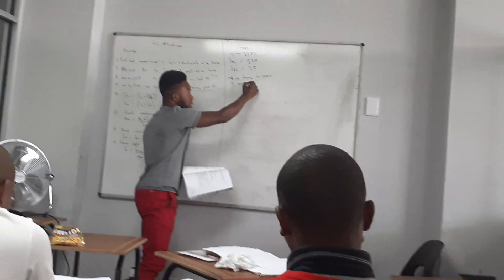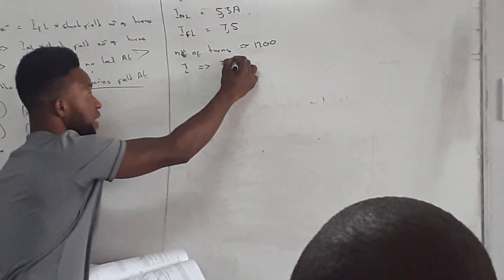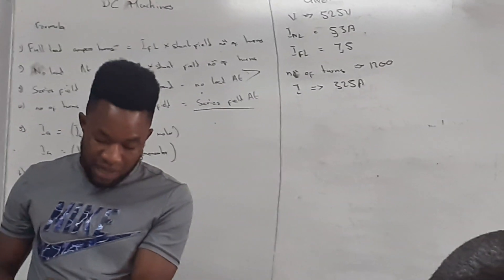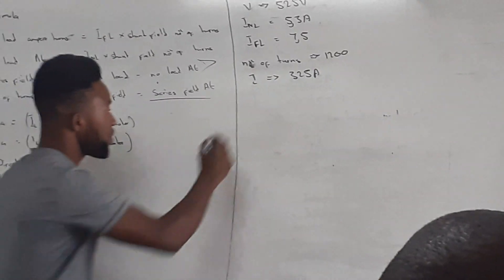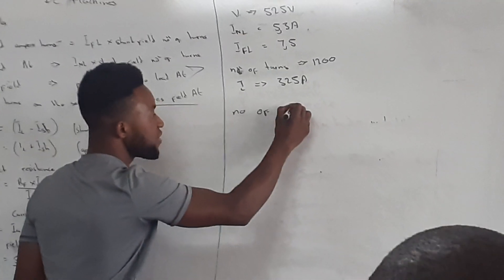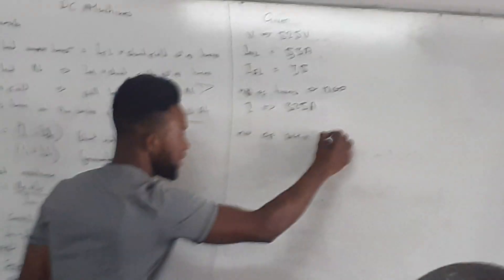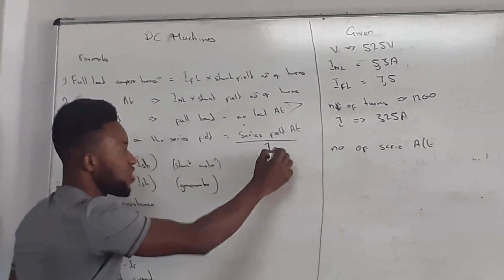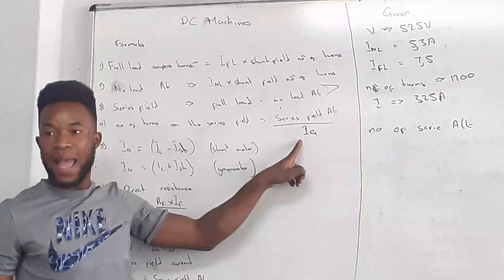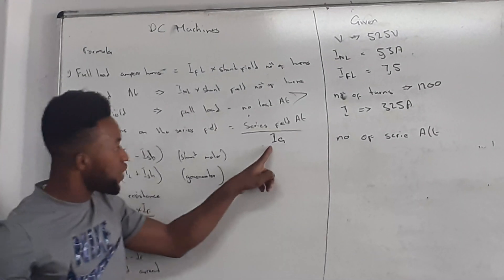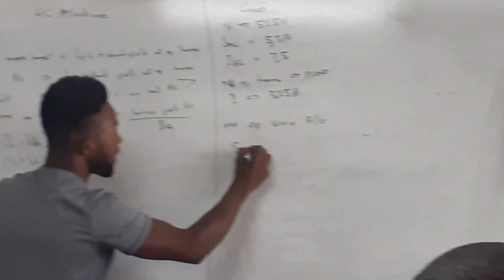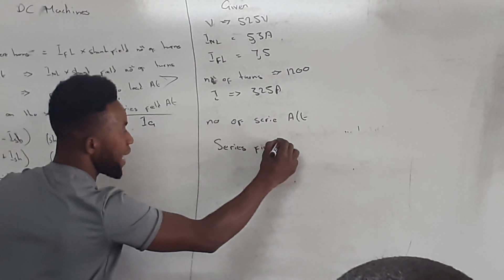The question asks us to determine the number of series turns required per pole. The formula to calculate the number of series turns per pole is: series field AT divided by armature current. But we don't have the series field AT yet. The formula to calculate the series field AT is: AT_full_load minus AT_no_load.